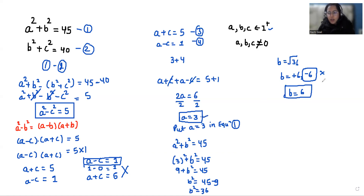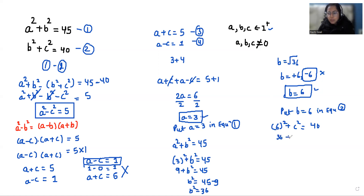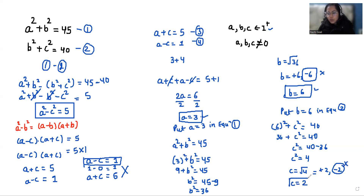Now we have the values of a and b. I am going to put b equals 6 in equation number 2. So 6 squared plus c squared equals 40, giving 36 plus c squared equals 40, so c squared equals 40 minus 36, which is c squared equals 4. Therefore c equals the square root of 4, so c equals plus 2 or minus 2. We reject minus 2, so the value of c is 2.